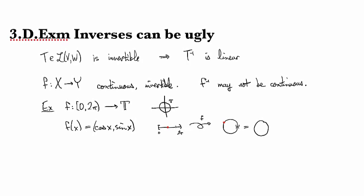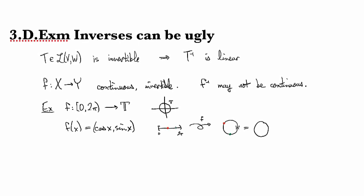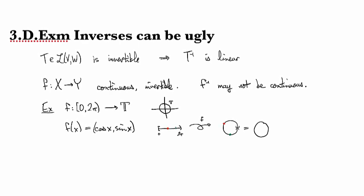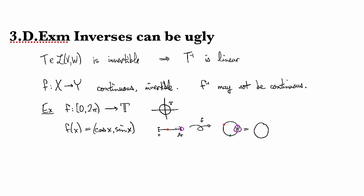I've removed the endpoint from the interval at 2π so it's not included in the domain. There's no overlap—that's the idea of what's going on here.